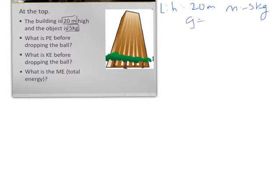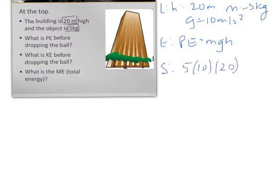And even though it doesn't say it, we should always know that G is 10 meters per second squared. Our equation is going to be PE equals MGH. And to solve, we'll have 5 times 10 times 20, which is equal to 1,000 joules. So this answer is 1,000 joules.